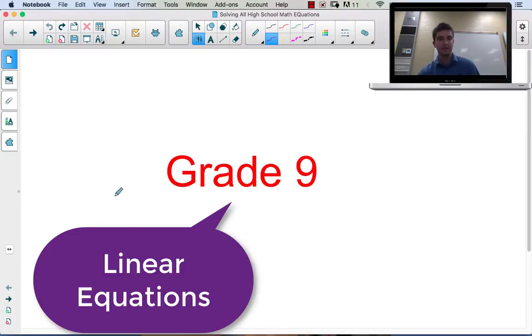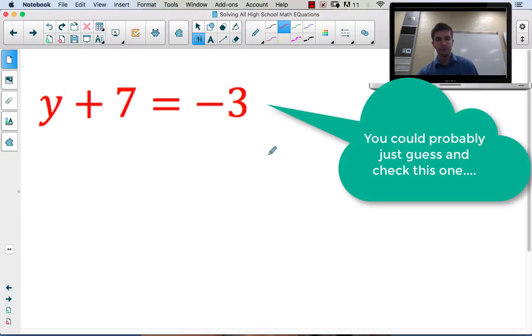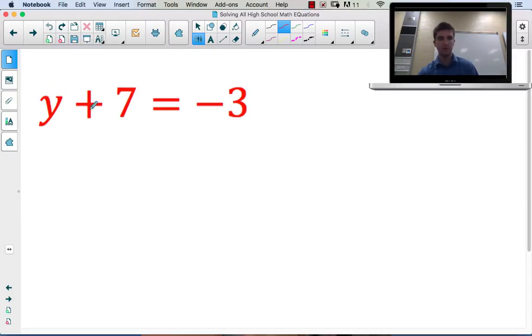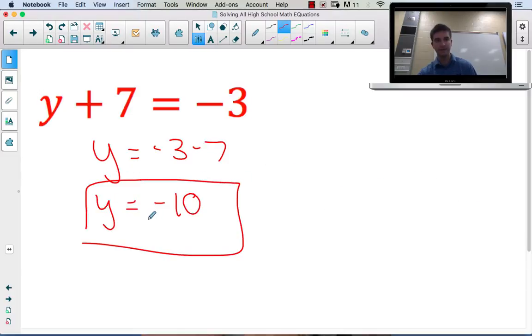Let's start with grade 9. In grade 9, you start with basic degree 1 or linear equations where variables have an exponent of 1. For y + 7 = -3, we're looking for what value makes the equation true. To isolate the variable, apply inverse operations. The opposite of adding 7 is subtracting 7, so y = -10. Plugging it back in, -10 + 7 = -3, which is the value that makes the equation true.